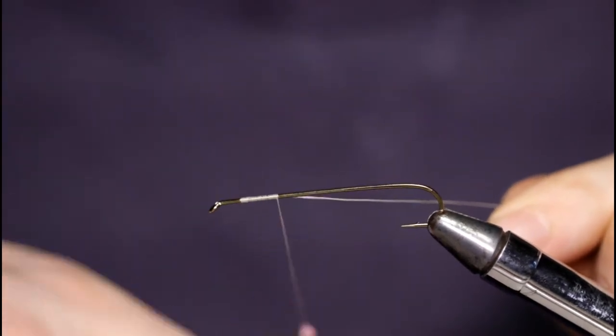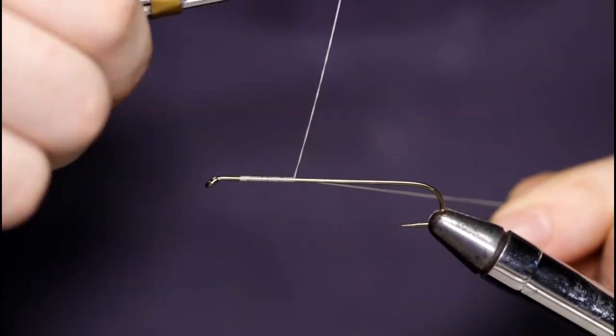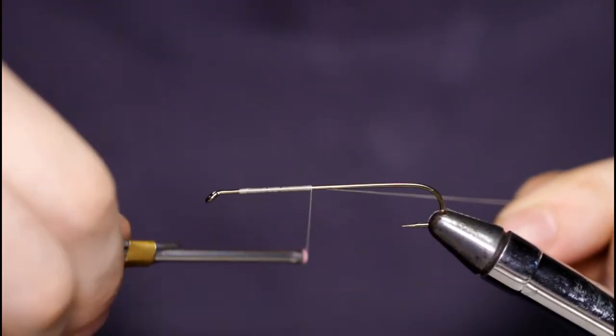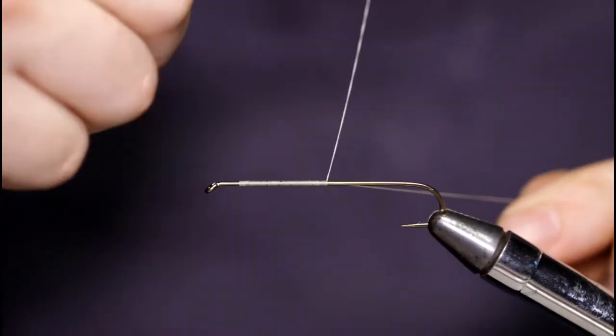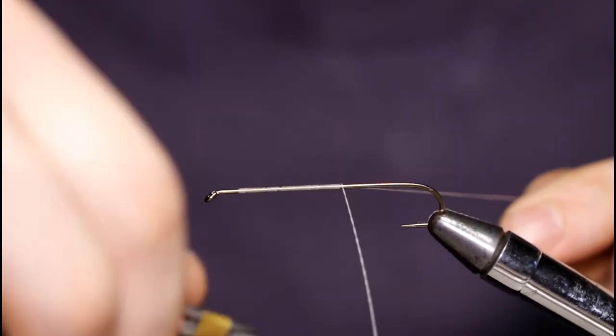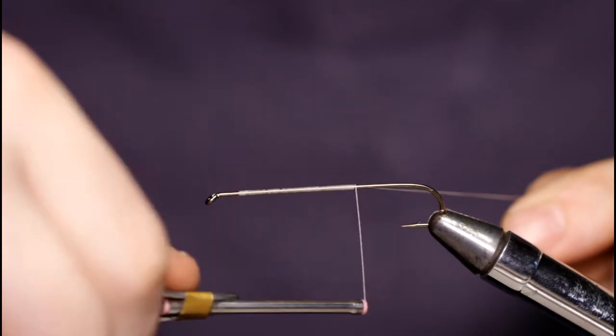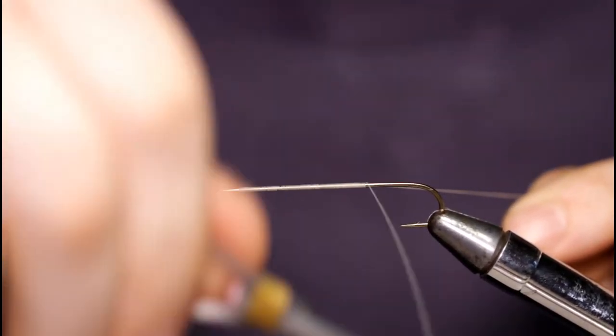I'm going to start with my hook in the vise and some 210 UTC thread in white. I'm putting a base of thread down on my hook shank, working my way down to the point of the hook.